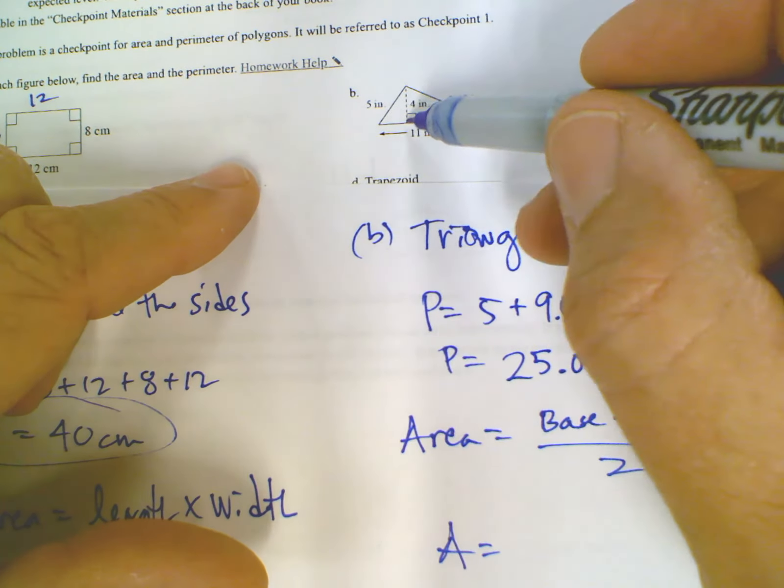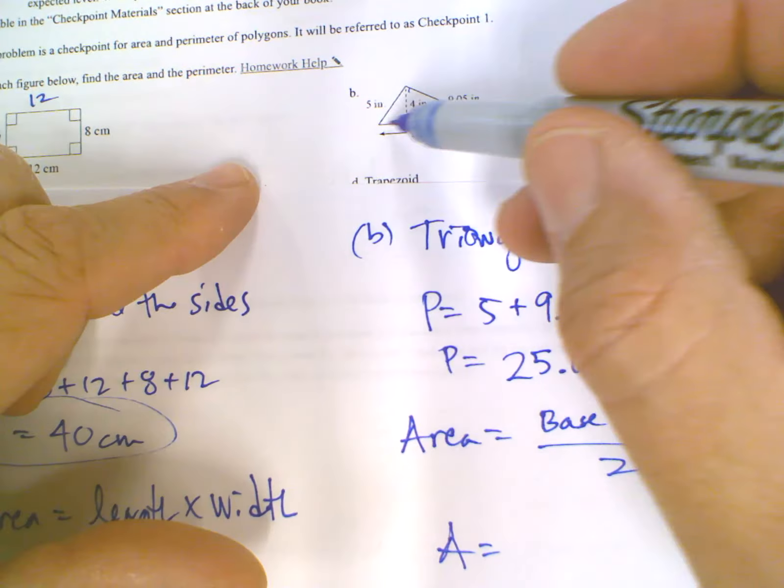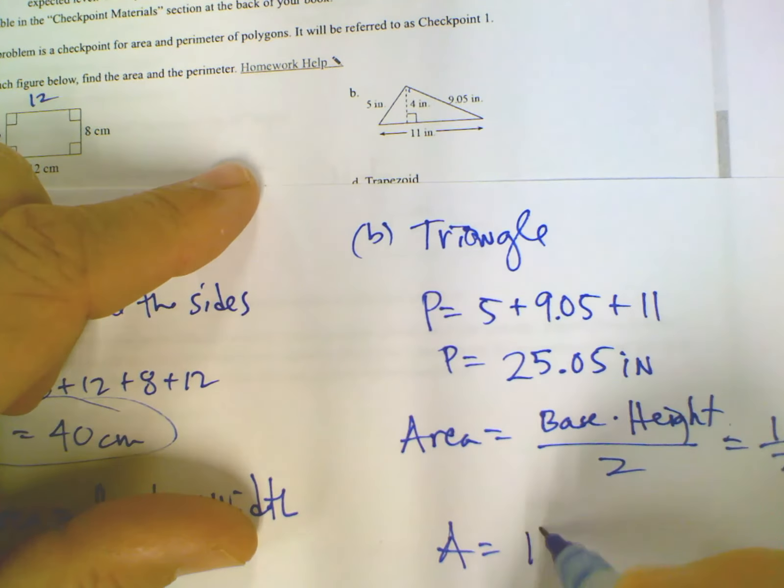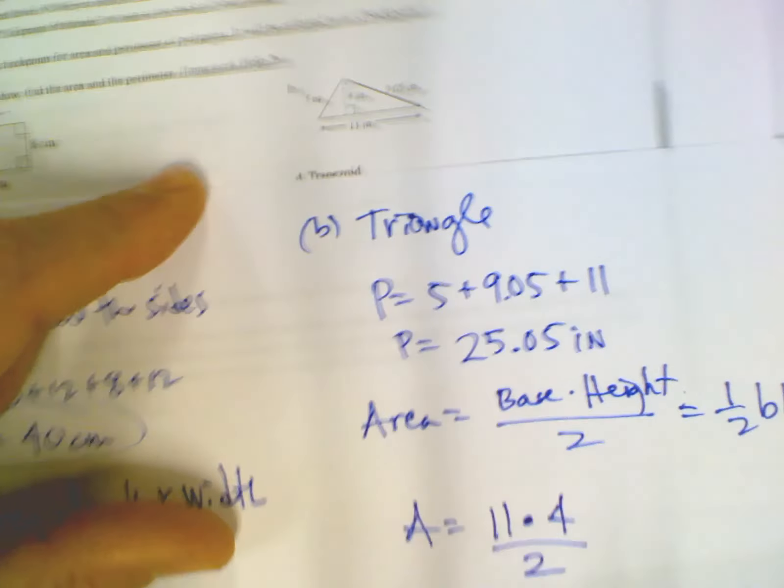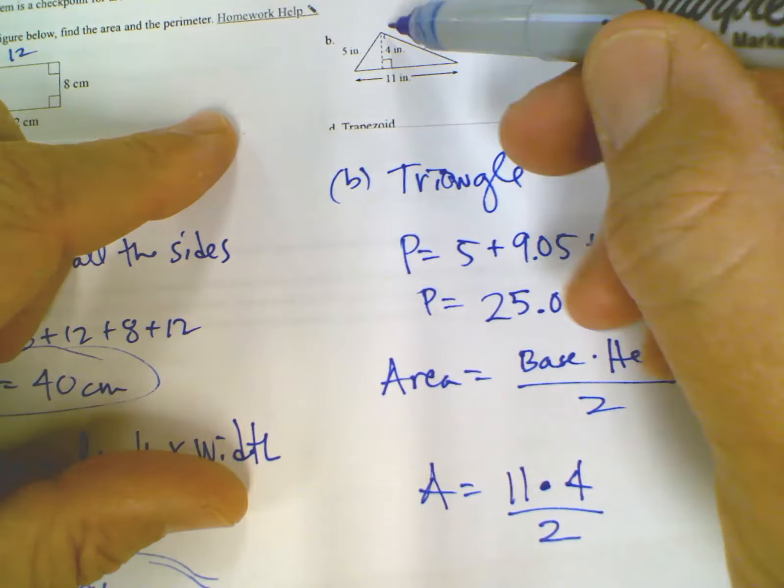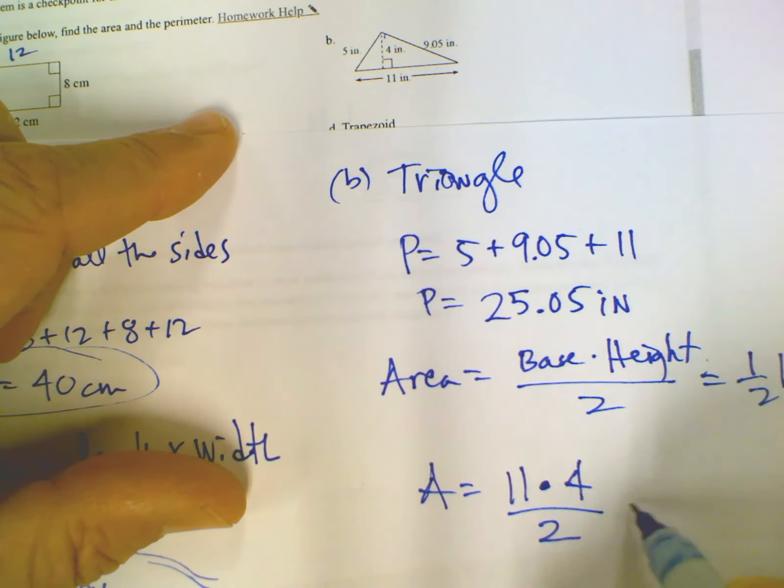90 degrees is called perpendicular. So we have perpendicular lines, the height and the base. So I would say 11 times 4, all divided by 2, because the 4 is the height, the base is the 11. So 11 times 4 divided by 2.